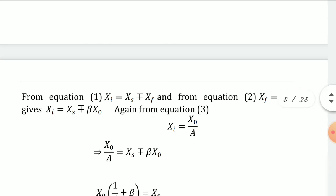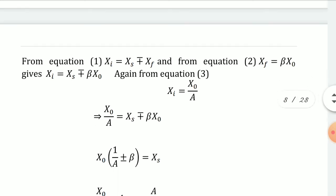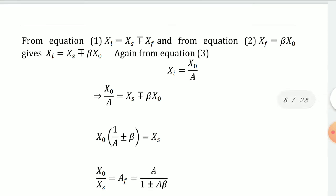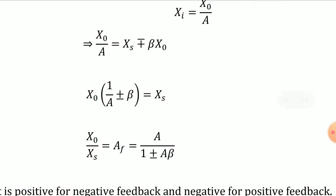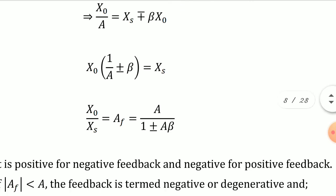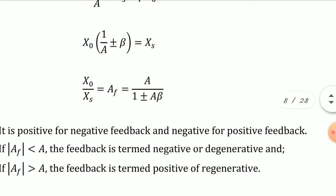Collecting all X_O terms on one side: X_O/A plus/minus beta·X_O equals X_S. Taking X_O common: X_O times (1/A plus/minus beta) equals X_S, which gives (1 plus/minus A·beta)/A equals X_S/X_O. Therefore, the gain with feedback A_F equals X_O/X_S equals A divided by (1 plus/minus A·beta).